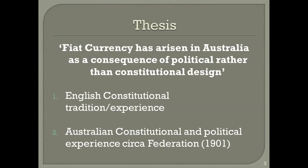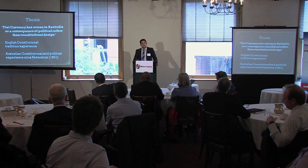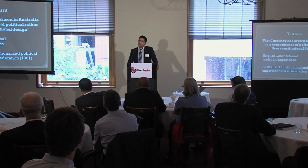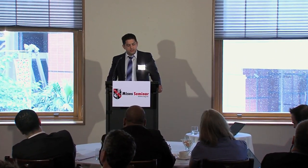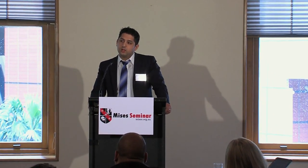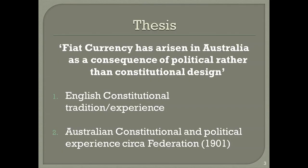The thesis I'm presenting today is that the fiat currency system in Australia has arisen as a consequence of political rather than constitutional design. In defending this thesis I'm going to focus on two main areas of interest. First, the English constitutional tradition in relation to the issuing of paper money — because the Australian Constitution is born of that tradition, and because the events of the late 17th and early 18th century in England capture the way in which paper money enhances and concentrates organised state power. The second area is the Australian context and the political maneuverings that resulted in the establishment of the Commonwealth Bank and later a government-issued paper money eventually severed from the gold standard.